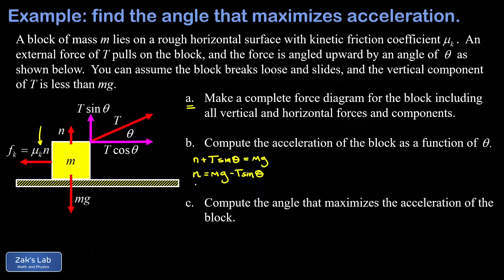That means our kinetic friction force is going to be mu_k times the normal force, so mu_k times (mg minus T sin theta). Now that we have that figured out, we can apply Newton's second law in the x direction. We want to look at F_net equals ma in the x direction.